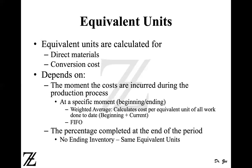In weighted average, you consider 100% of costs from the prior period for units sitting in beginning inventory. However, if you don't have any ending inventory from the prior period — meaning everything is incurred in the current period — then whether you use the weighted average method or the FIFO method, they will both give you the same equivalent units. This is only the case when there is no beginning inventory from the current period.